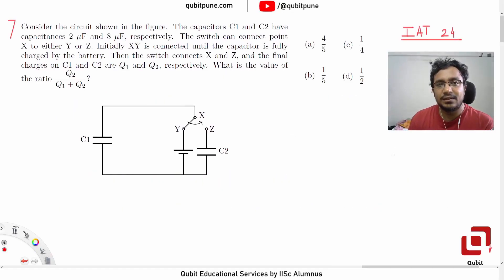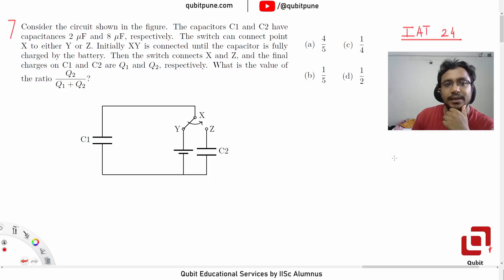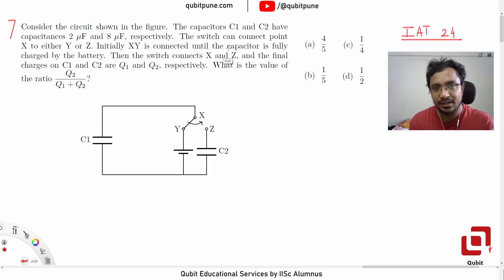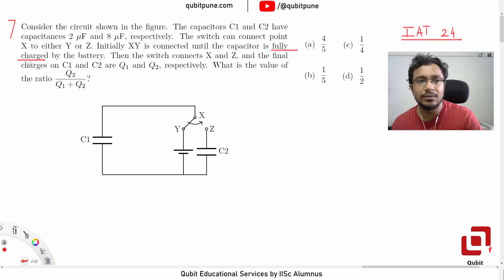Consider the circuit shown in the figure. The capacitors C1 and C2 have capacitances 2μF and 8μF respectively. The switch can connect point X to either Y or Z. Initially XY is connected until the capacitor is fully charged by the battery. Then the switch connects X and Z, and the final charges on C1 and C2 are Q1 and Q2 respectively. What is the value of the ratio Q2 by Q1 plus Q2?